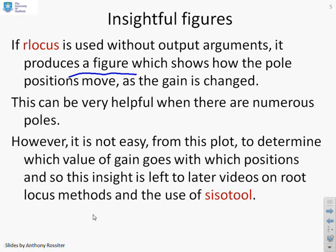And that's very helpful when there's lots of poles. However, there is a warning. It's not easy from this plot to determine which value of gain goes with which pole position. It will just give you a line. So you're a bit caught in the middle. You can either have the numbers or you can have the figure, but you can't have both unless you run the command twice. And we'll illustrate this now.